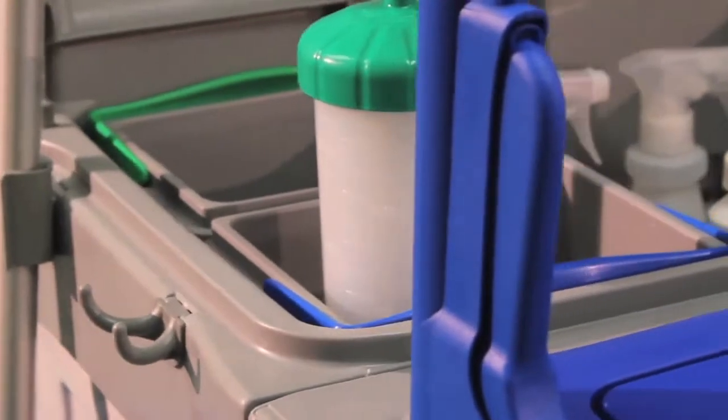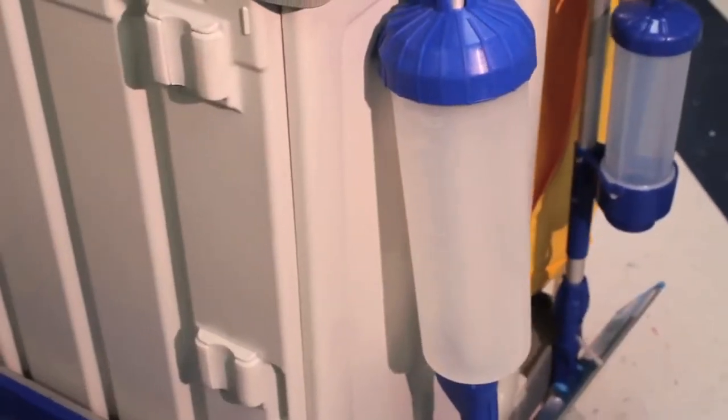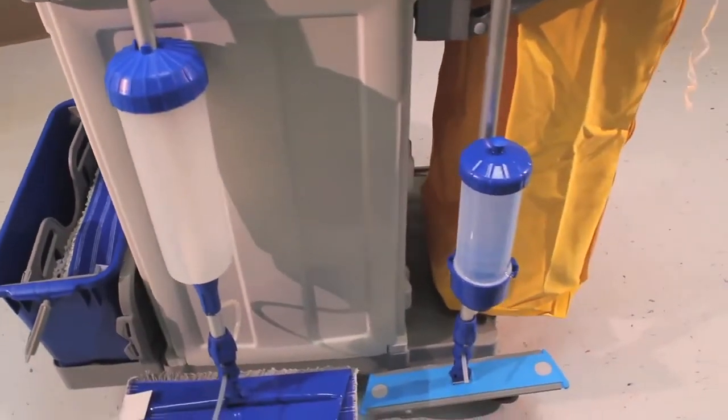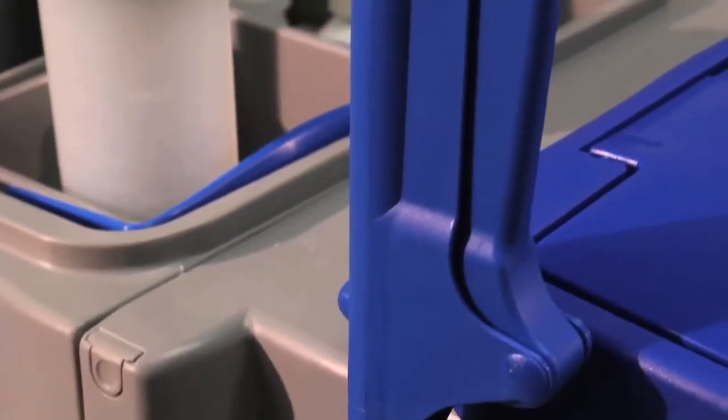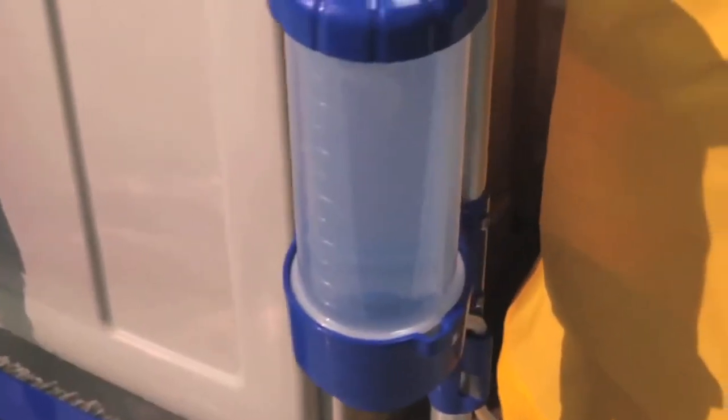The Total Mop and Total Mop Quick Change is a mopping system with an onboard solution tank that extends the range of the charged mop in the top-down system from 300 square feet of coverage to over 1,000 square feet, at which point the mop is too soiled for continued use.